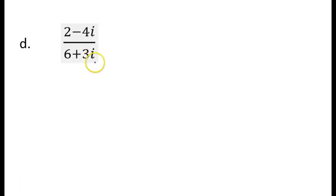For d, again, we are not allowed to have imaginary numbers in the denominator. But because we have a binomial, we can't just multiply by i. Instead, we have to multiply by the conjugate of the denominator. That's where you just change the middle sign. So this will be 6 minus 3i would be the conjugate of 6 plus 3i. And you have to do the same thing in the numerator. So 6 minus 3i again.